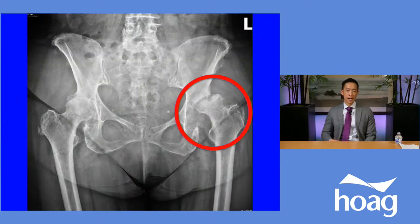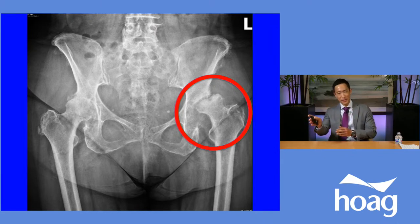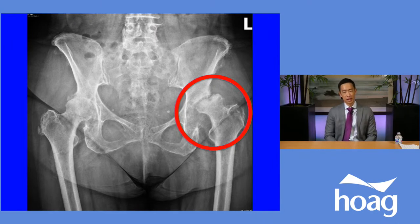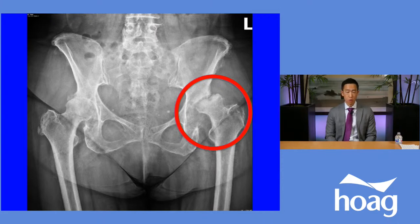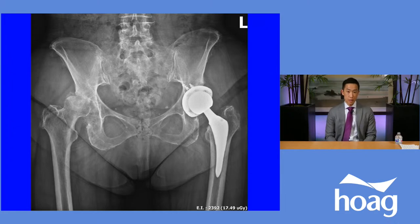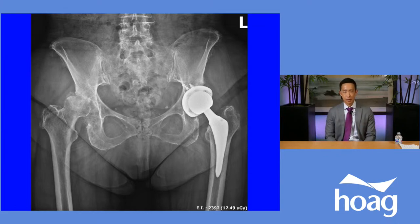Here's an actual patient case — her x-ray before surgery shows the left hip with the ball taking on an oval shape, severely worn against the socket. She had tried injections and medications but her pain wasn't improving. We decided together that hip replacement was the next best option. Here's what her post-operative x-ray looks like: you can see the prosthetic socket, ball, and stem. The gap you see between ball and socket is the plastic liner, which doesn't show up on x-ray. She's thankfully doing very well.